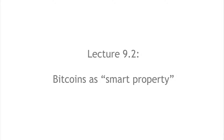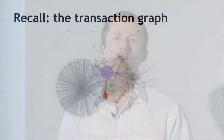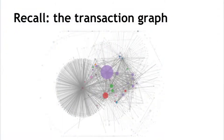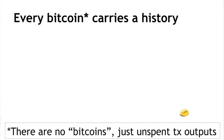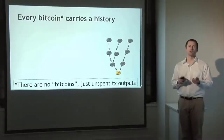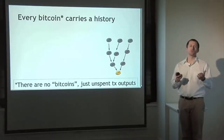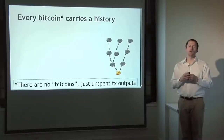Now we're going to talk about using Bitcoins to represent smart property — something other than simply one unit of currency. Recall that you can trace ownership of value in the Bitcoin system over time. Every Bitcoin has a history that anyone can view in the blockchain — a history of everyone who's owned any piece of that coin — going all the way back to some coinbase transaction when the coins were originally minted.